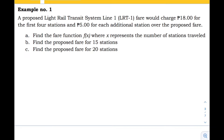A proposed Light Rail Transit system Line 1 (LRT1) fare would charge 18 pesos for the first four stations and five pesos for each additional station over the proposed fare. Letter A: find the fare function f(x) where x represents the number of stations traveled. Letter B: find the proposed fare for 15 stations.